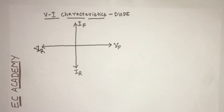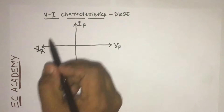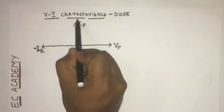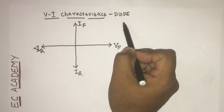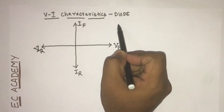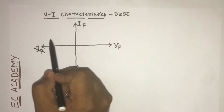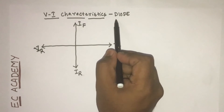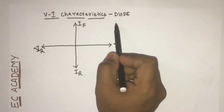Hello friends, welcome to EC Academy. In this lecture, we will discuss about the VI characteristics of the diode, which is also known as voltage current characteristics of the diode.